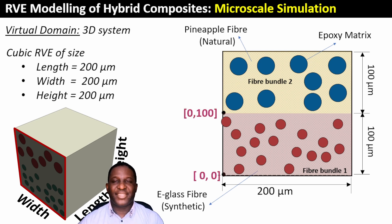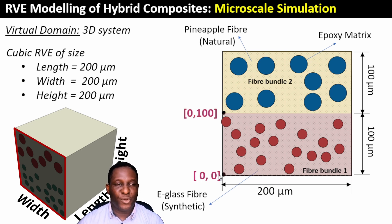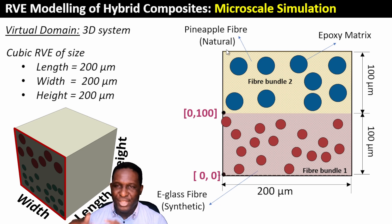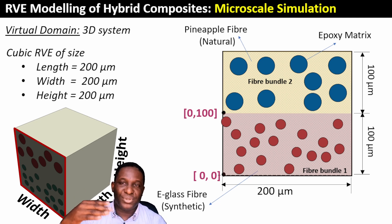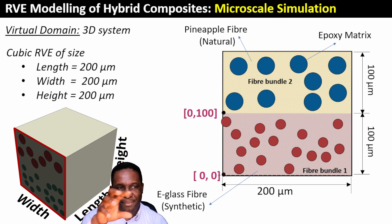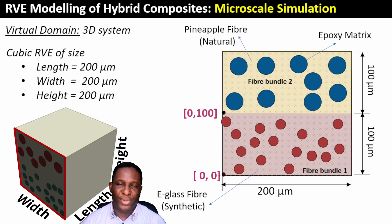An important detail: the coordinate of the bottom point is (0, 0), the coordinate at the mid-point is (0, 100), and the coordinate at the top is (0, 200). This is critical when distributing the fibers within the spaces.